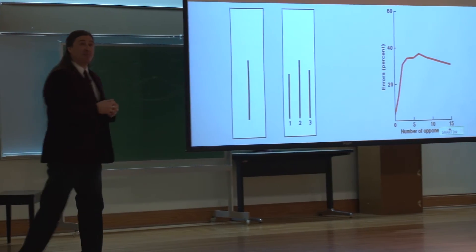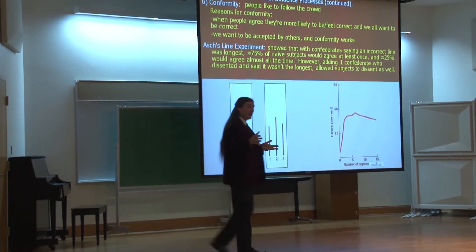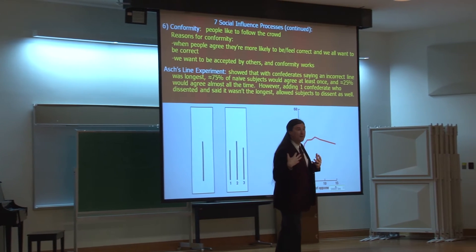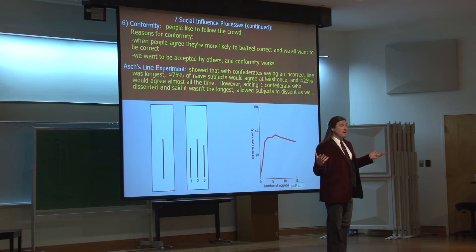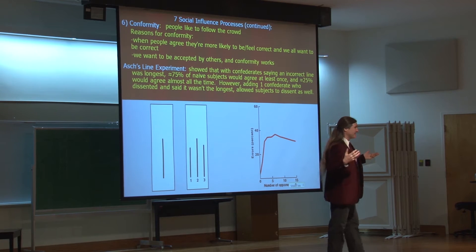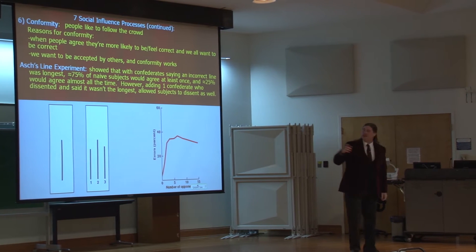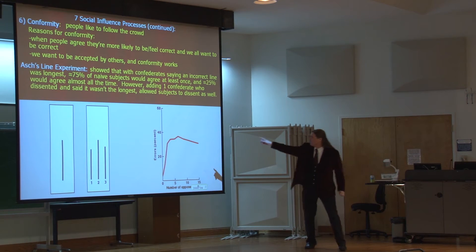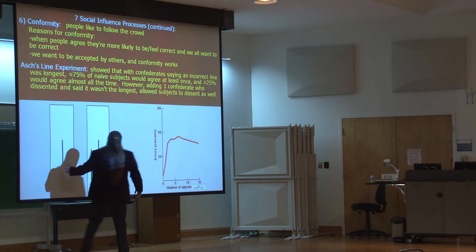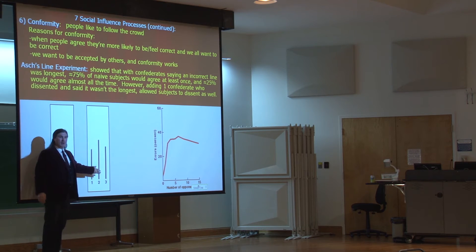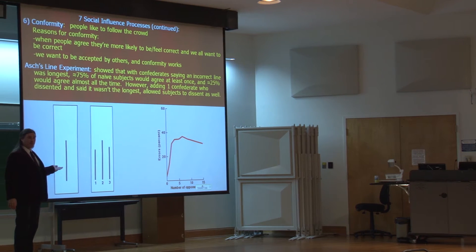Asch did this experiment, this social psychology experiment, that most people looking at right off the bat would say, I would never do that. I wouldn't do this. But guess who was in his experiment? A bunch of people. Just like the rest of us. And here's what he did. He said, I want you to all judge the lengths of a line. Here's the target line, and I want you to tell me what of the following three stimuli most closely resemble this one.